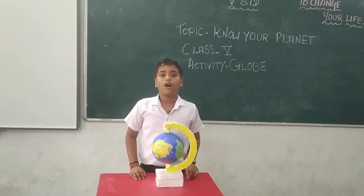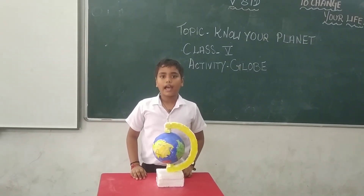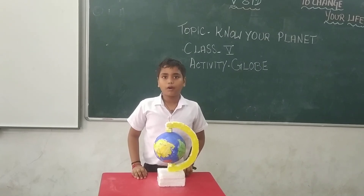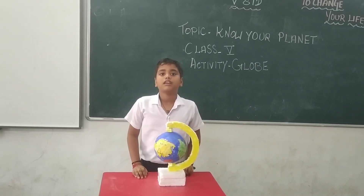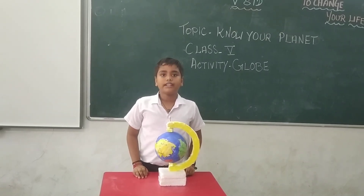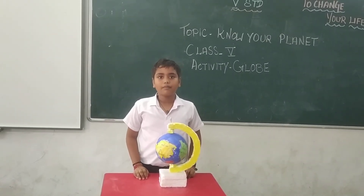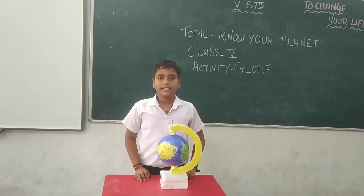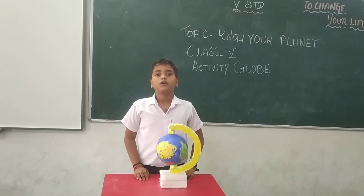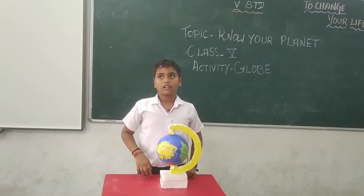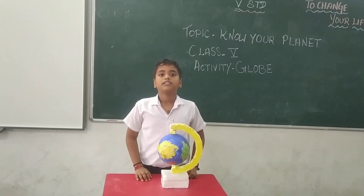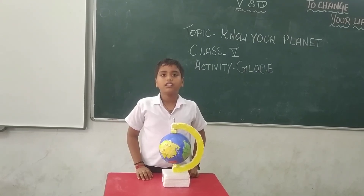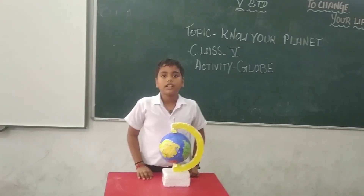It has air and water bodies. Our Earth is made of landmasses and water bodies. The large landmass is called a continent and the large water body is called oceans.